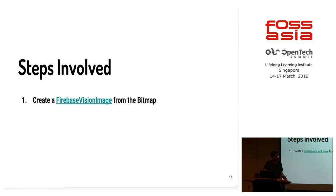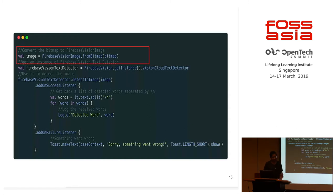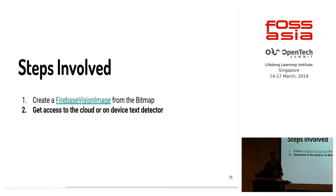The implementation steps are very simple even if you don't know mobile development. First, you create a Firebase Vision image from the bitmap you receive. Firebase Vision image is a class within Firebase ML Kit — you create an object of this class and Firebase performs all the ML inferencing on it. It's a single line of code. The code language shown is Kotlin, by the way — JS developers might find it somewhat similar, and if you're a Java developer, it's quite similar too. You create a Firebase Vision image and pass in the bitmap; it automatically takes care of the conversion. Then next, you get access to the cloud or on-device text detector — also a single line of code.